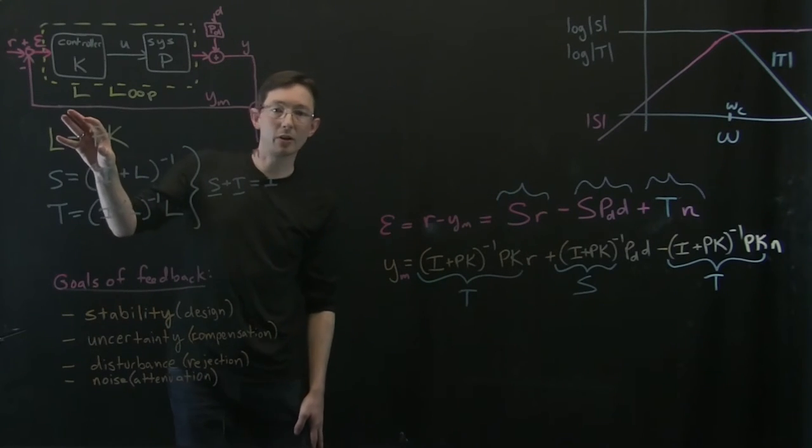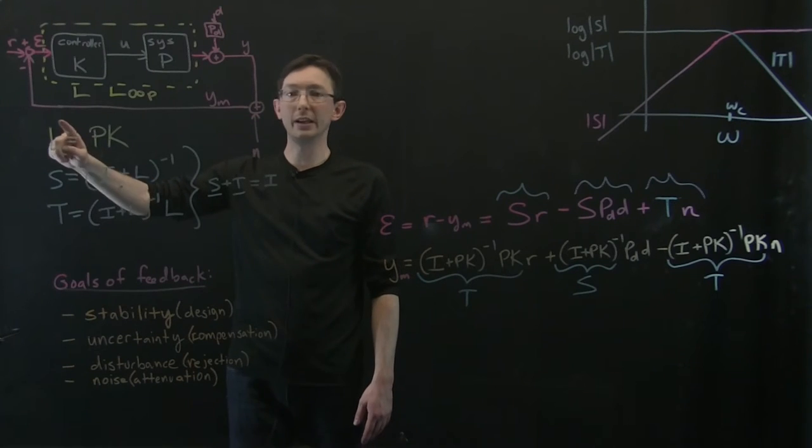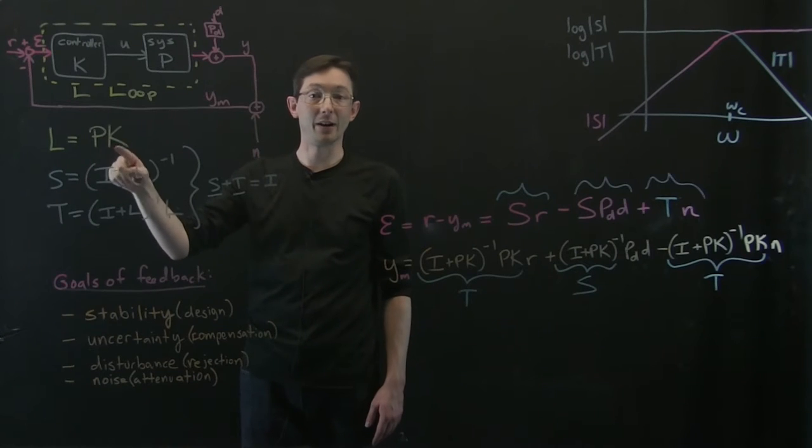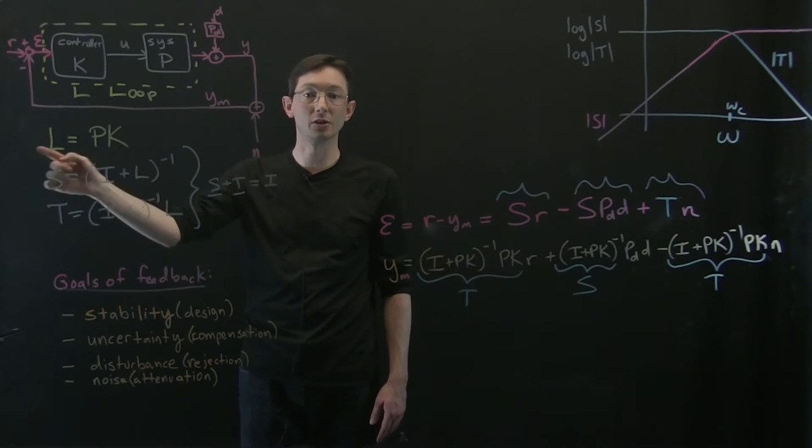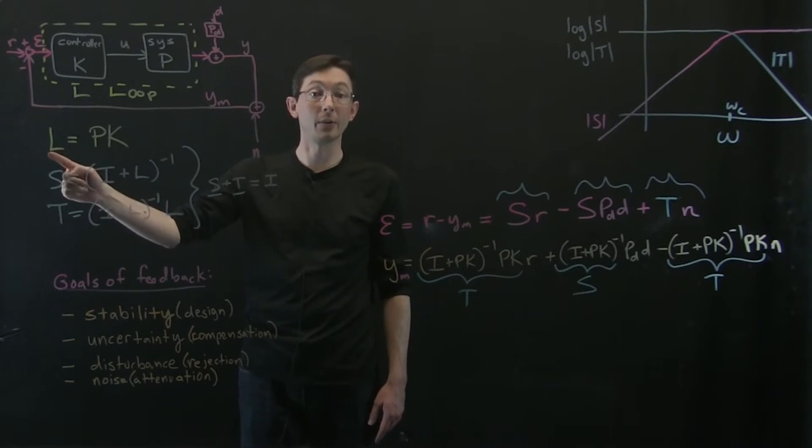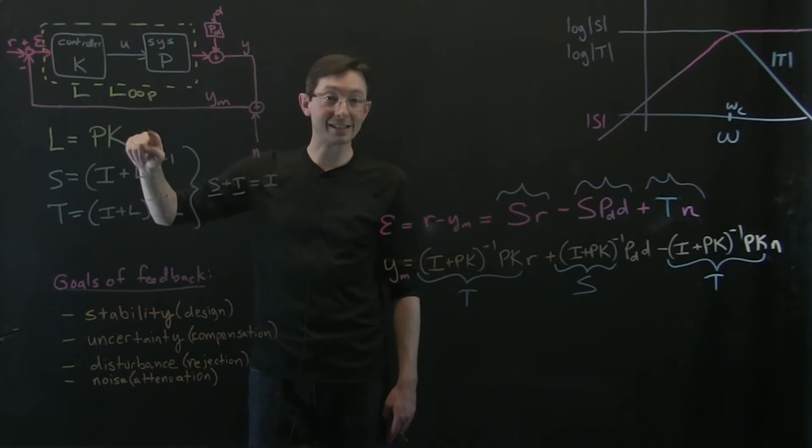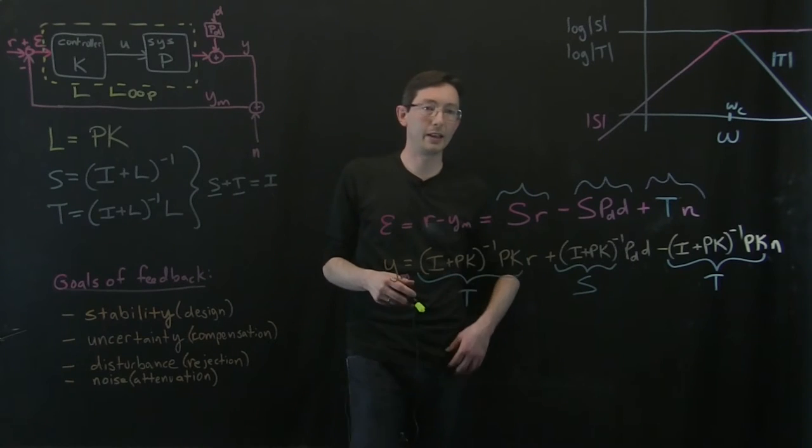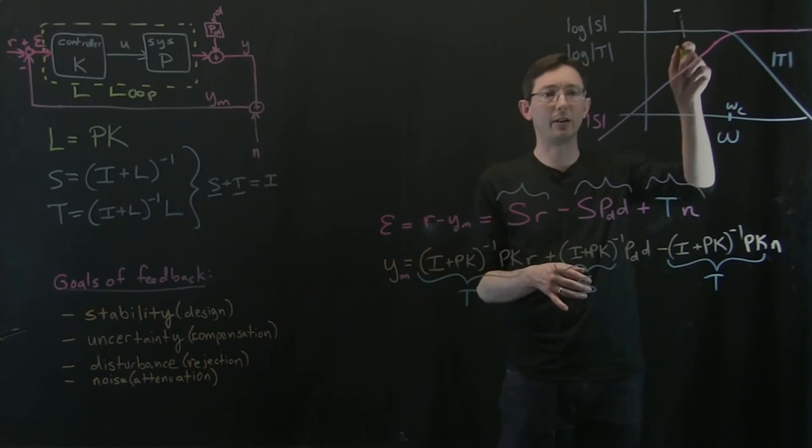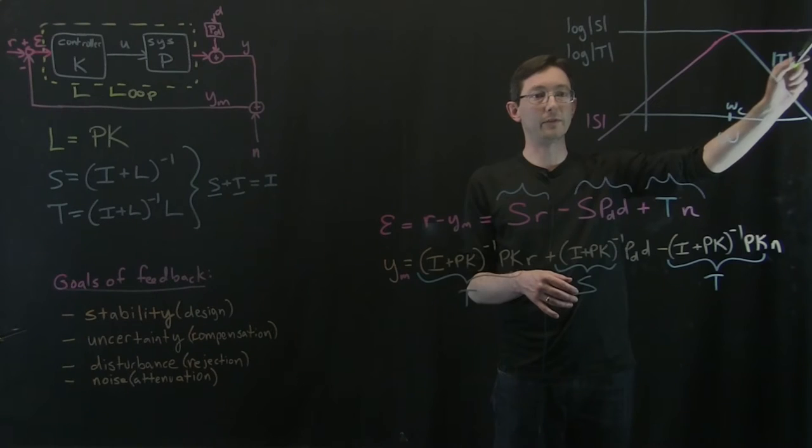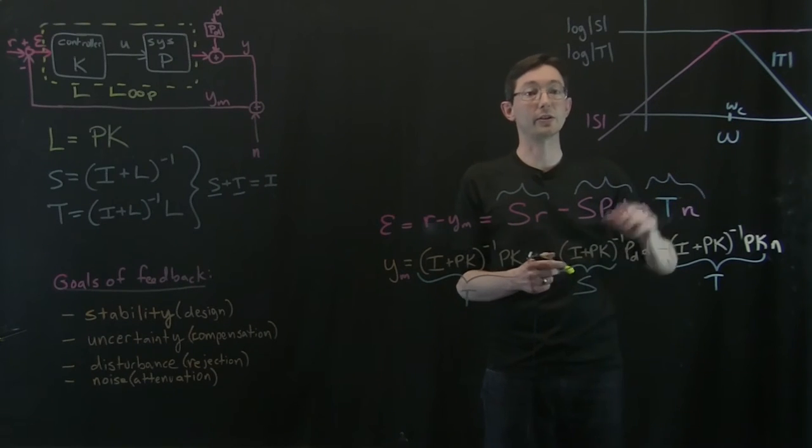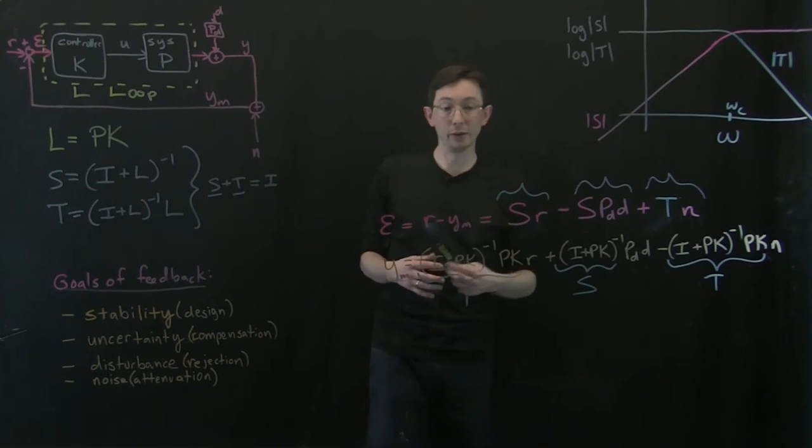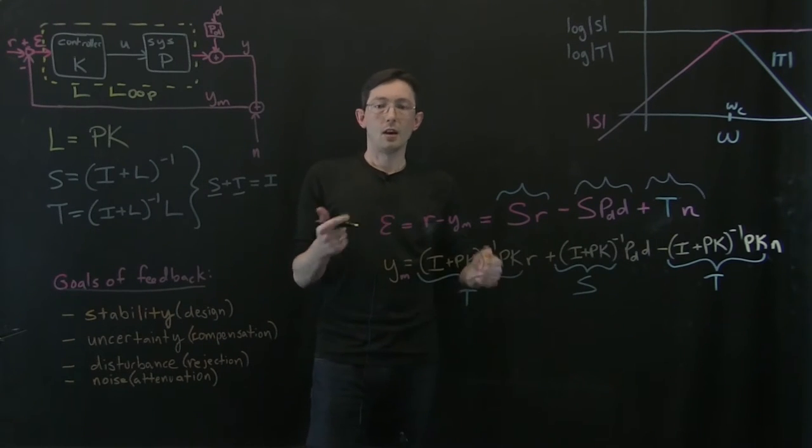And so the last part of this is thinking about how to relate these to the loop transfer function L because that's something that has a direct K in it. So this is pretty easy for me to change by changing K. So if I know what I want L to look like, I can design a K to give me a good L. So that's kind of the last piece of this, is thinking about if I want my sensitivity function and my complementary sensitivity functions to look like these, then what should my loop transfer function look like?